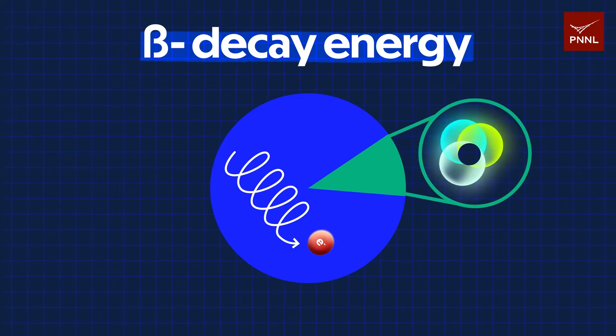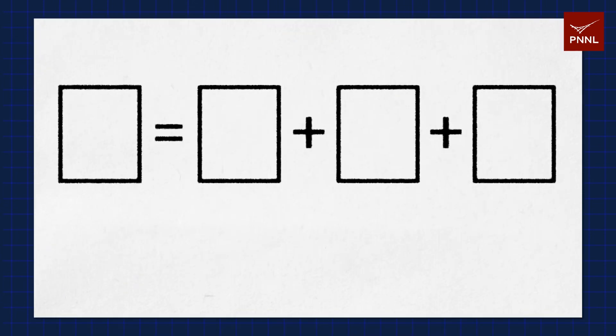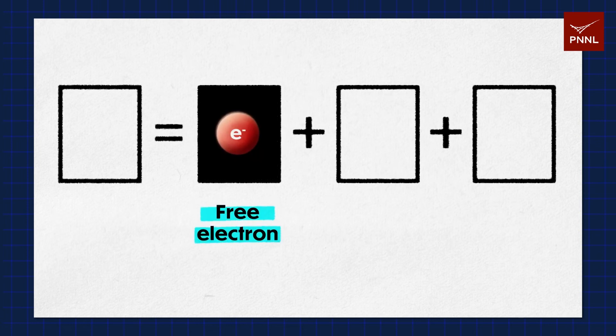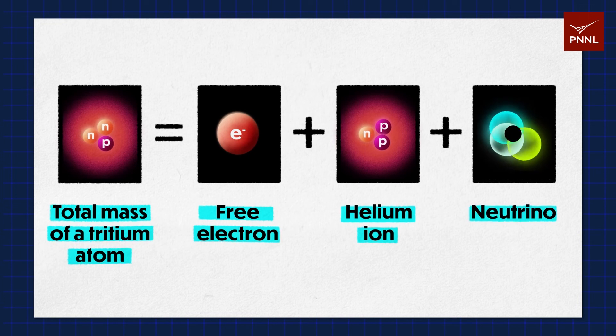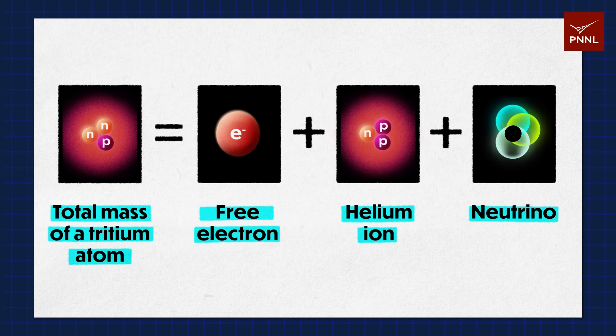We can summarize with this simple equation. The total mass of a tritium atom equals the energy of its parts. When we measure the free electron and we know the total mass, the missing energy is the neutrino mass, bringing us one step closer to understanding the building blocks of the universe.